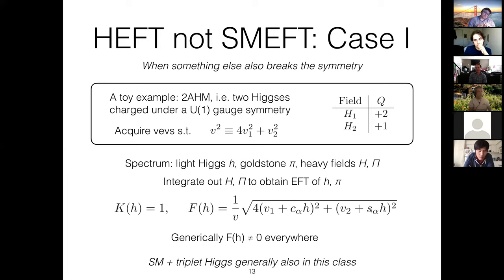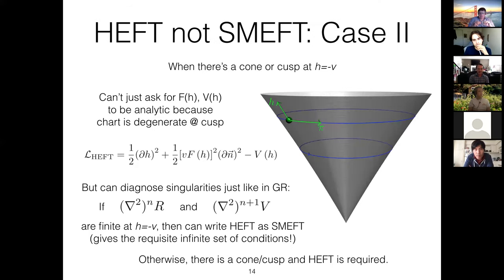That's the case I think Manohar and company picked out. But especially for those who think about EFTs from a geometric perspective or nonlinear sigma models geometrically, there's a more obvious case missing from that classification: it's also possible just to have a cone or a cusp at what you thought would be your invariant point. You have to be careful identifying the existence of a cone or cusp, because if you just use the HEFT coordinates — that's some chart on your manifold — that chart degenerates at the symmetric point. If you just look at the HEFT Lagrangian and ask for the functions of the Higgs to be analytic to diagnose whether there's a cusp, that generally isn't a good guide.